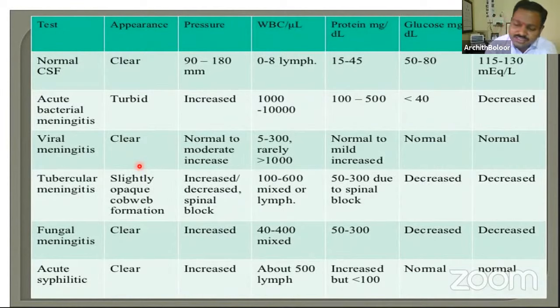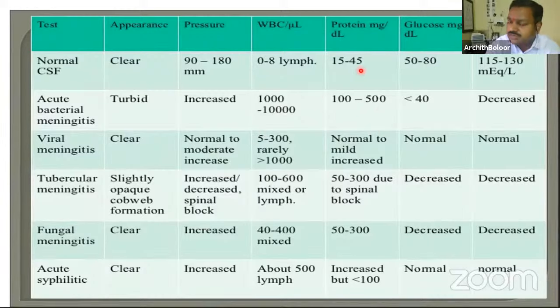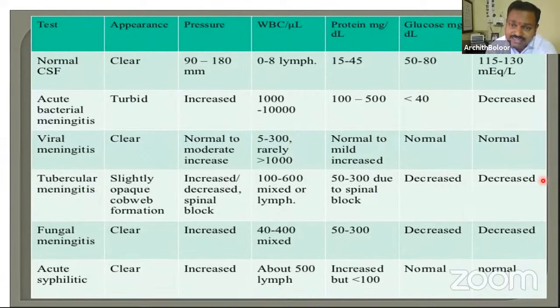Another common indication for CSF examination is Guillain-Barré syndrome. A very characteristic finding is albuminocytological dissociation — protein and cells normally go together, but in GBS there is no infection so cells are normal, while protein is elevated due to demyelination of nerve roots releasing myelin. Elevated protein with normal cell count is very characteristic of GBS and is one of the diagnostic features.